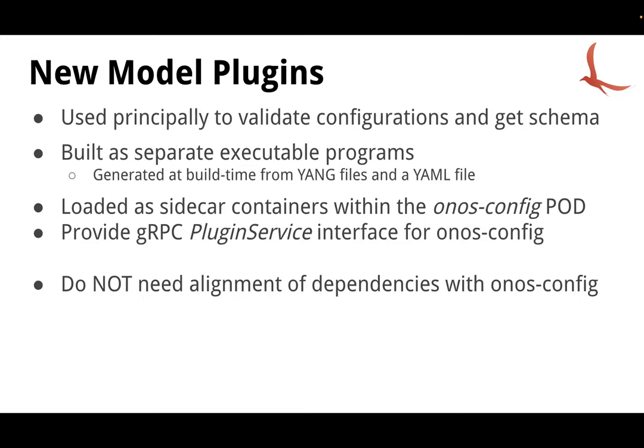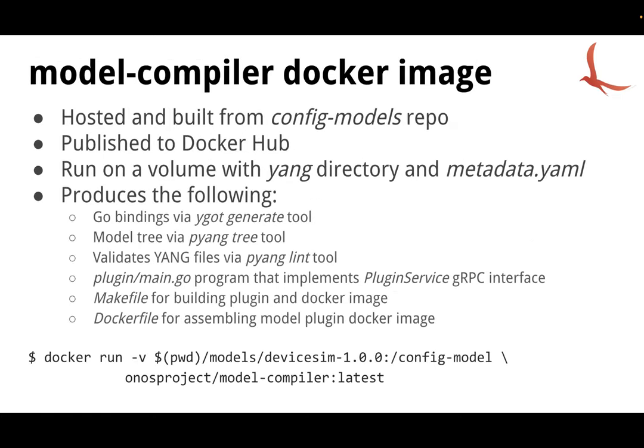Because it runs as a separate process, we no longer need to worry about aligning the package dependencies with OnusConfig. It also has a separate failure domain — if there are issues, it won't take OnusConfig down. Work started toward this goal on the model compiler. The code is still hosted in the OnusConfig models repository. It's a compiler that refactors some of the on-the-fly compilation to invoke it at build time instead.